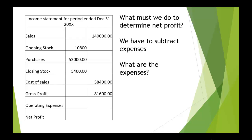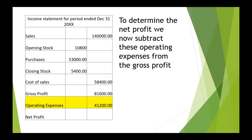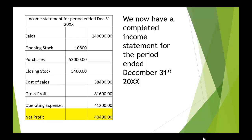To determine net profit, we need to subtract the expenses. We get the expenses from the trial balance and add up the operating expenses. If we take the operating expenses from the gross profit, we get the net profit. We've now got a completed income statement for the period ended December 31st.